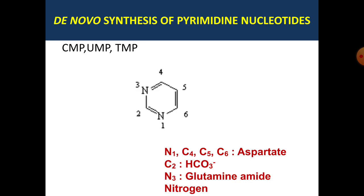De novo synthesis of purines we have already seen. Similarly, pyrimidine nucleotides are also synthesized by de novo synthesis as well as the salvage synthesis pathway. The pyrimidine nucleotides include cytidine monophosphate, uridine monophosphate, and thymidine monophosphate — uracil or thymine present depending on whether we are looking at RNA or DNA.